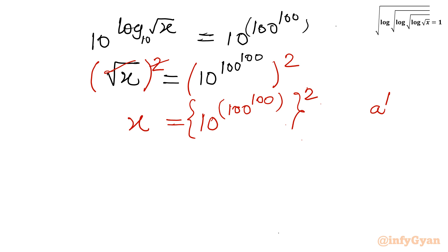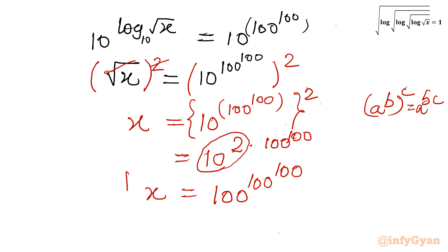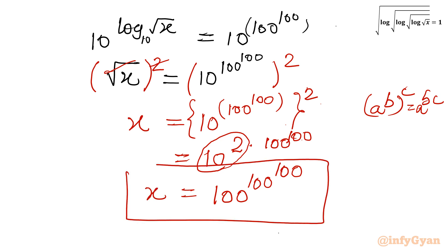Using the property a^b whole power c equals a^(b×c), so let's multiply: 10 power 2 times 100^100. So 10 power 2 is 100. So I will write our answer: 100 power 100, power 100. This is our final and correct answer.